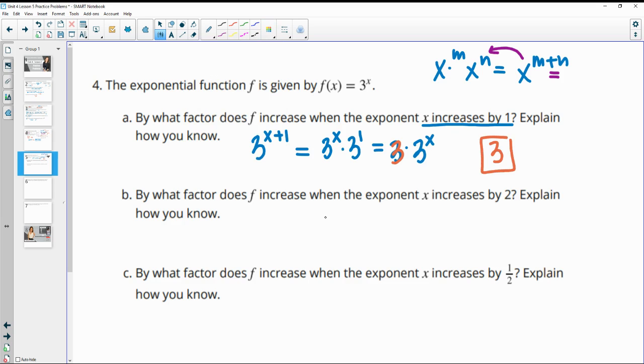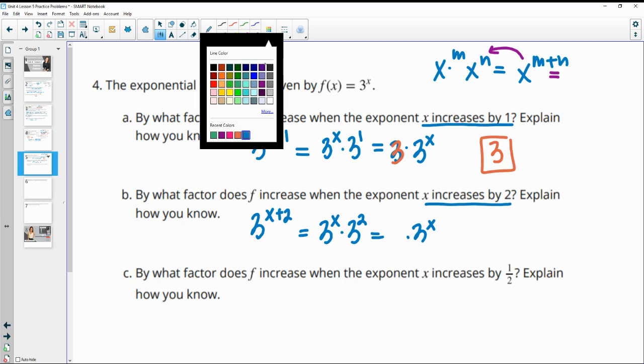So then this next one asks us what about when the exponent increases by 2? So now we have 3^(x+2). So then this is going to be very similar. It's going to be 3^x times 3^2.